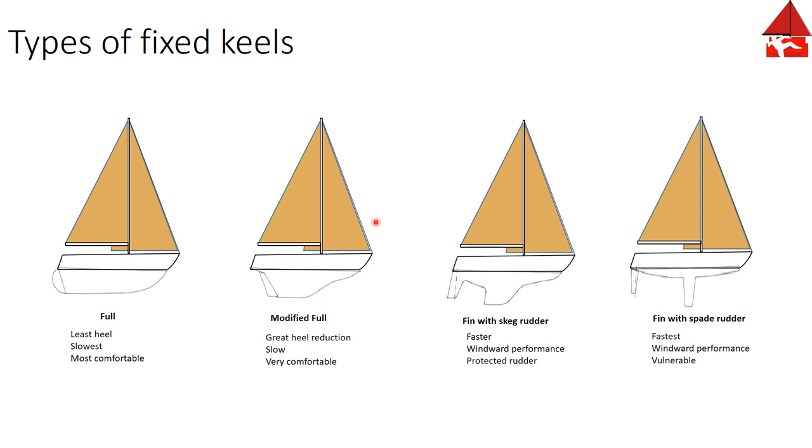As we move to the right, the reduction in size of the keel gives you less of that weight down force, so the boat has to heel more. You can also see as we move to the right the reduction in size reduces the amount of wetted surface.